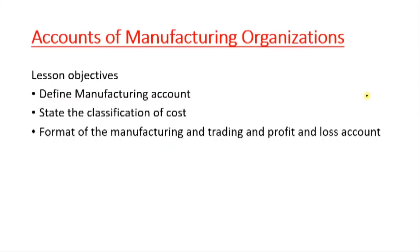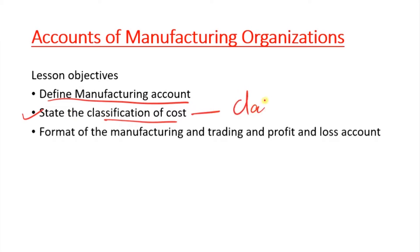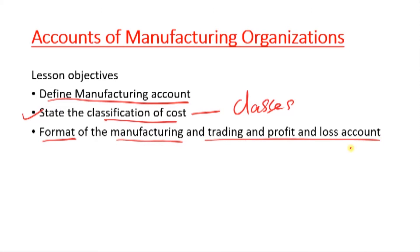Let's look at our lesson objectives. By the end of the lesson, we should be able to define manufacturing account, state the classification of costs — the various classes of cost — and know the formats for the manufacturing and trading profit and loss account. The third objective will take us to the final account of manufacturing firms.